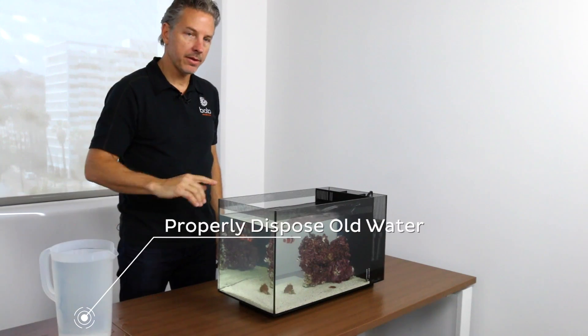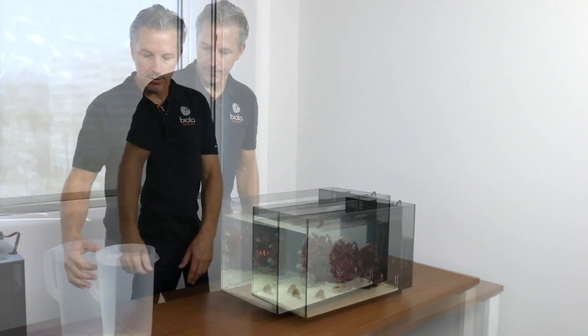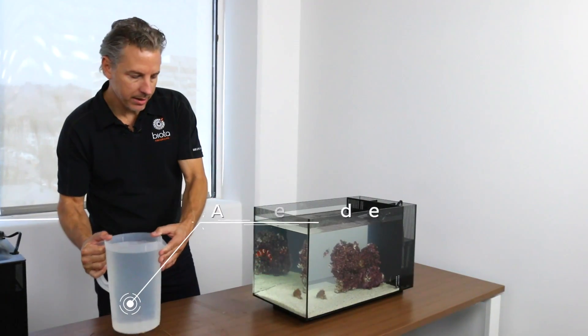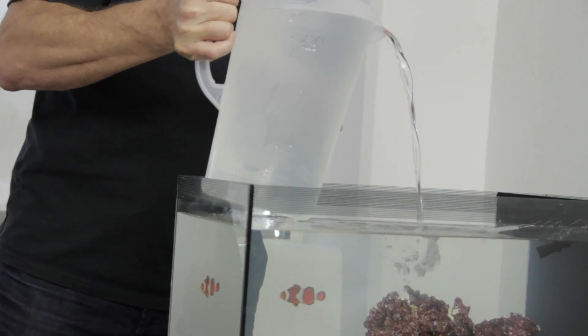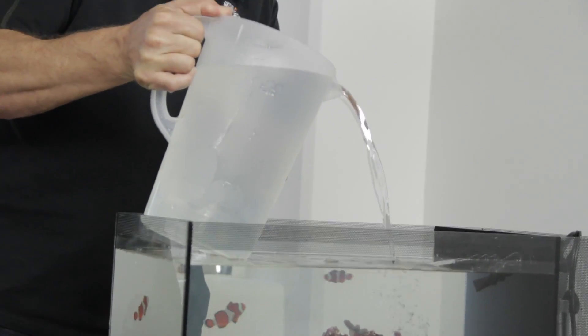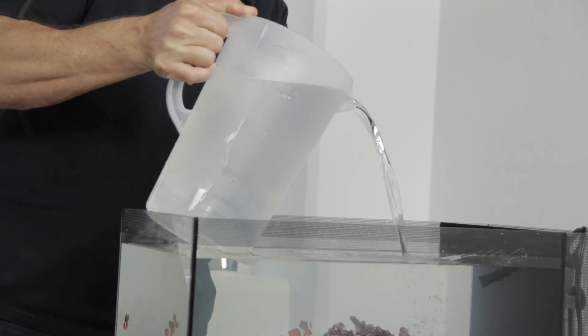So we'll get rid of this water and we're going to add the new seawater back to the aquarium. So we're adding our new seawater to the tank. We want to be careful not to pour too quickly. And it's a good idea to pour it on the rock. That way it keeps it from stirring the sand everywhere and clouding the tank.